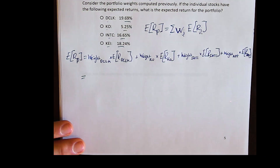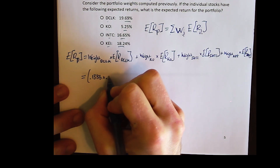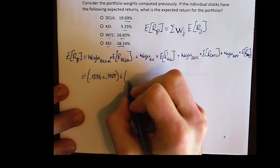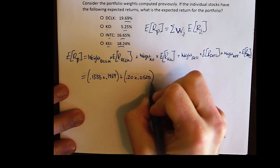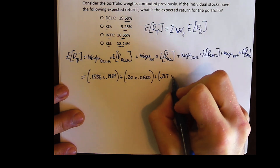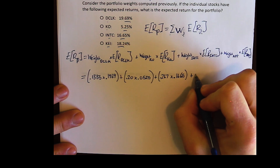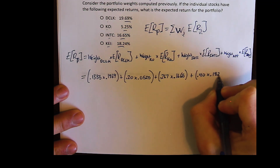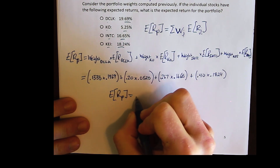I've already calculated the portfolio weights, so I just need to combine them. I have 13.33% of my portfolio in DoubleClick with an expected return of 19.69%, plus 20% in Coca-Cola at 5.25% expected return, plus 26.7% in Keithley Industries at an 18.24% expected return. Doing the algebra gives 0.1541, or a 15.41% expected return for the portfolio.